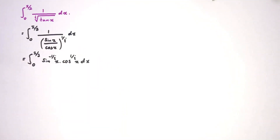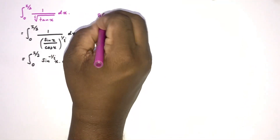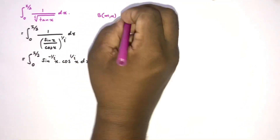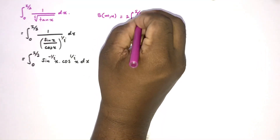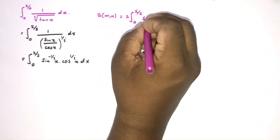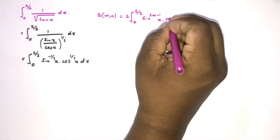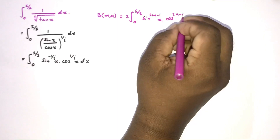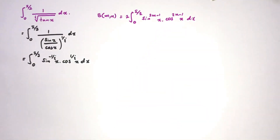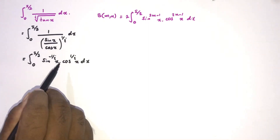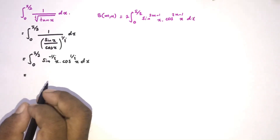Now we know about the beta function. Beta of m, n is equal to 2 times the integral from 0 to pi over 2 of sine raised to the 2m minus 1 of x, times cosine raised to the 2n minus 1 of x, dx. So we can represent our integral using this formula and convert it to a beta function.